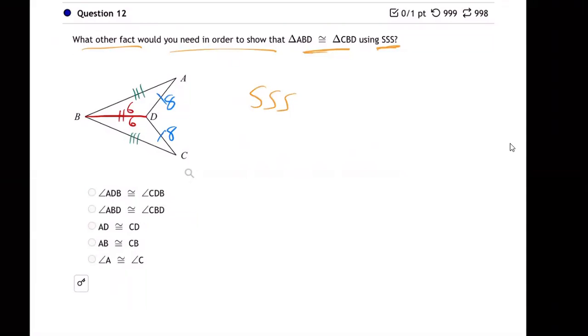and this side. Like maybe this is 10 and 10. That's what we need to know, don't we? We need to know AB and CB—we need to know those are identical to each other. And then